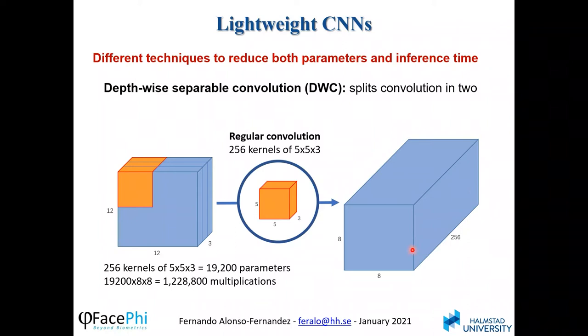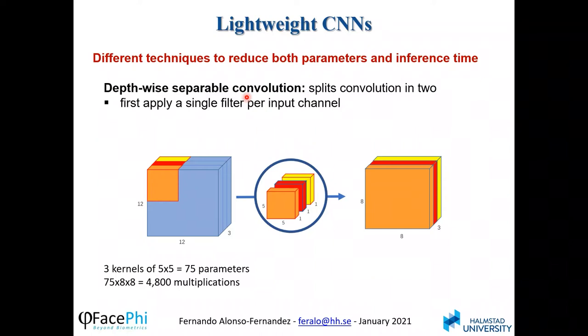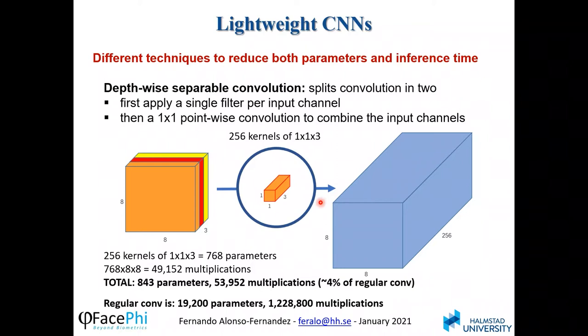Depthwise separable convolution divides convolution into two steps. First, it applies a single filter per input channel — with three input channels, three filters of 5×5 are applied, resulting in 75 parameters and fewer than 5,000 multiplications. Then 1×1 filters are applied to this output; to get 256 channels, 256 filters of 1×1×3 are used. Combined, these two steps result in fewer than 1,000 parameters and just above 50,000 multiplications — only 4% of regular convolution. The reduction in parameters is significant, though accuracy is slightly reduced, and both convolution speed and model size are substantially improved.